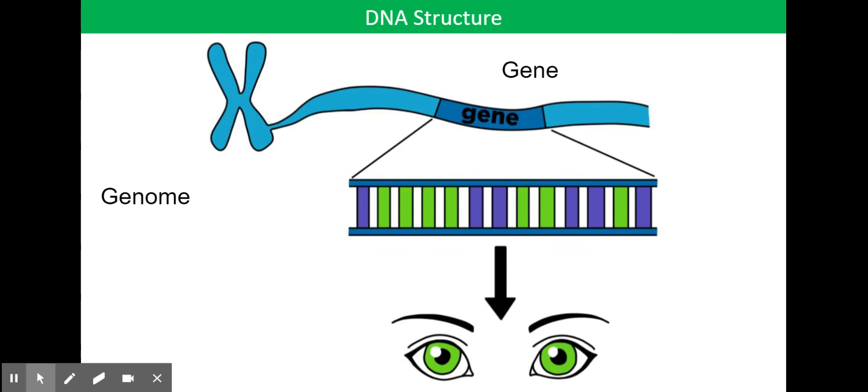I'm now going to introduce the term gene. So a gene is a section of DNA that codes for a protein and gives us the characteristics we have. So on the slide in front of you, you can see the term gene labeled there as a section of the DNA. And we've zoomed in on that section of the DNA and the exact sequence of A, T, C and G found in that particular gene will determine what color eyes you have.